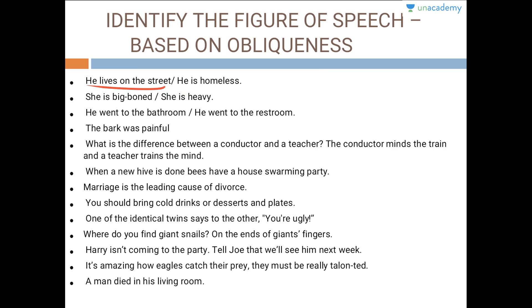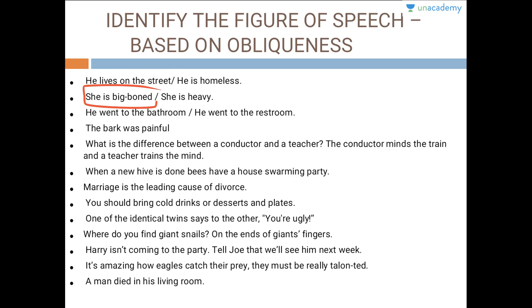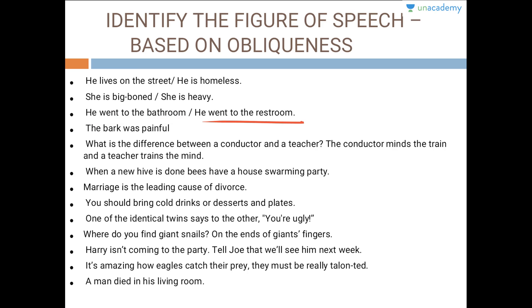He lives on the street — he is homeless. The correct answer for euphemism is 'he lives on the street,' because it is more polite and modest. She is big-boned instead of saying she is heavy — this is a correct example of euphemism; you can see the politeness and modesty hidden in the word 'big-boned.'